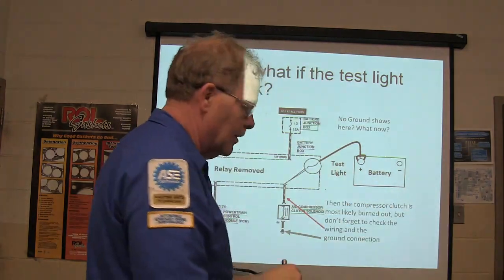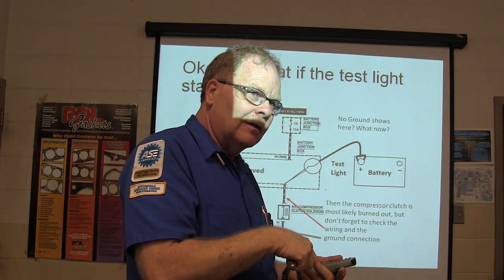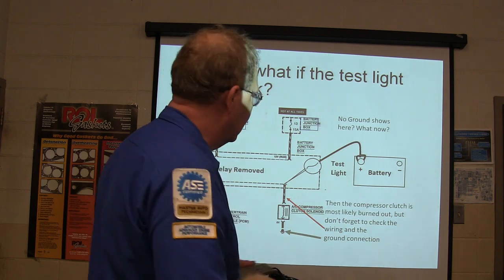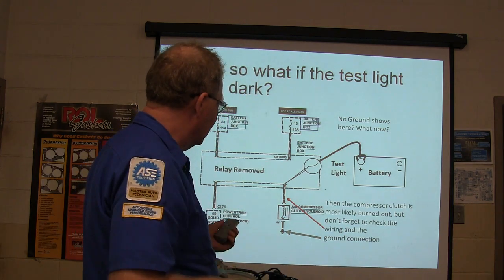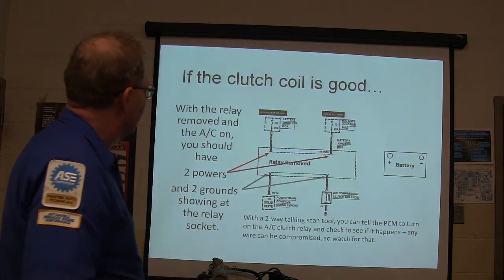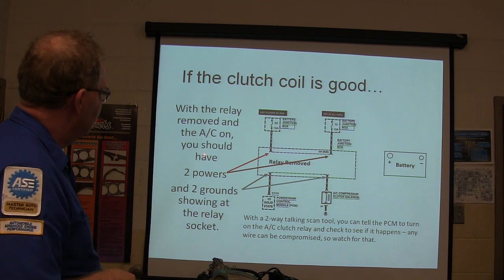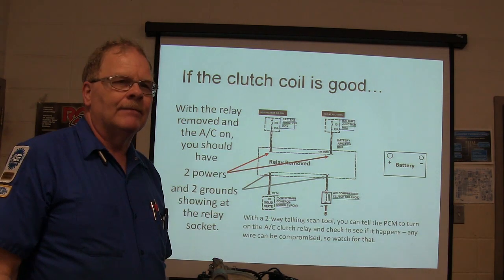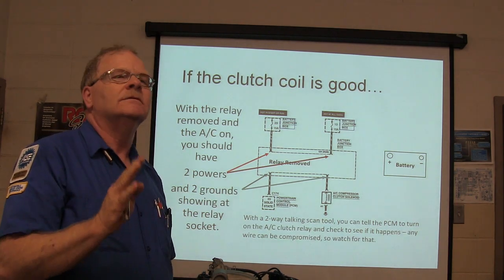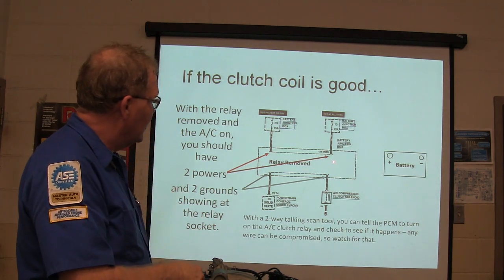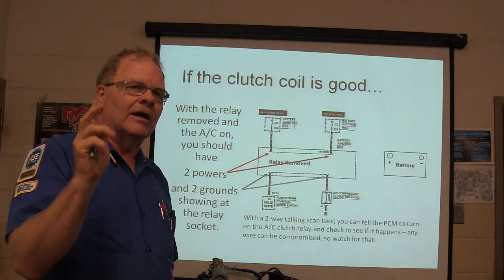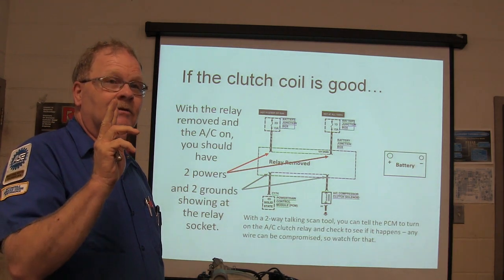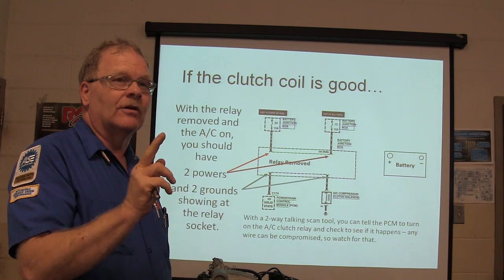If the test light stays dark, the compressor clutch is most likely burned out. Don't forget to check the wire and the ground connection — a broken wire or disconnected ground will give you the same symptom. Terminals can also be spread out by sharp test light probes crammed in there, causing a problem. Don't shove the probe in and spread the terminal — sometimes you end up buying a pigtail. With the relay removed and the AC on, you should have two powers and two grounds at the relay socket.